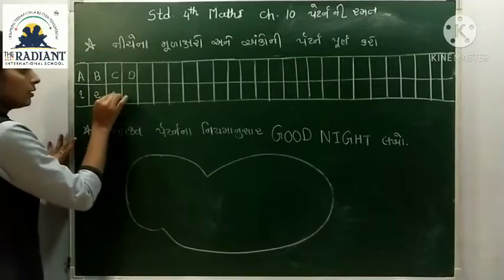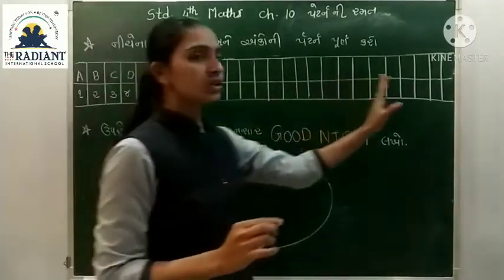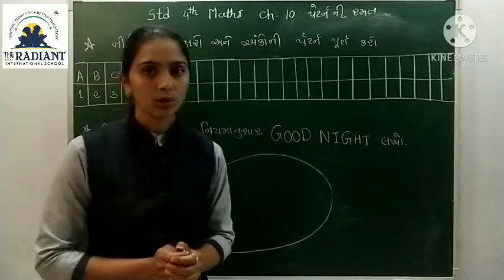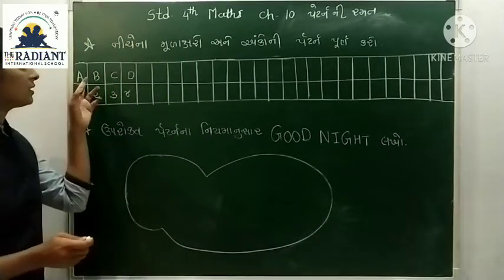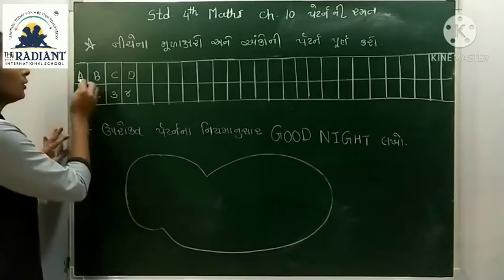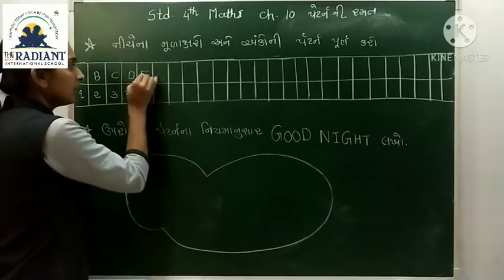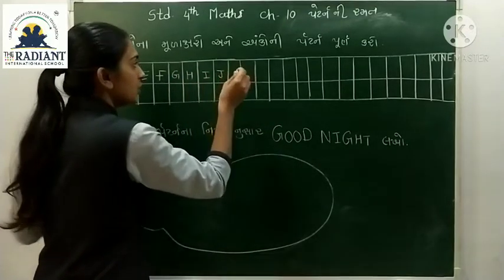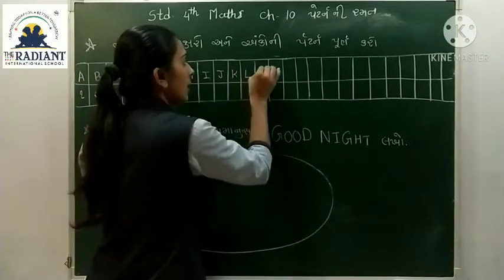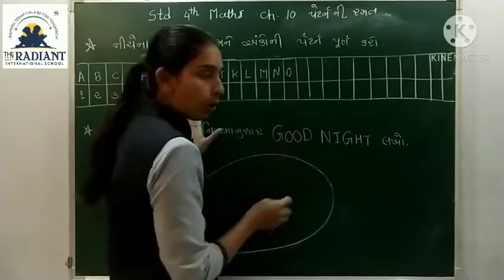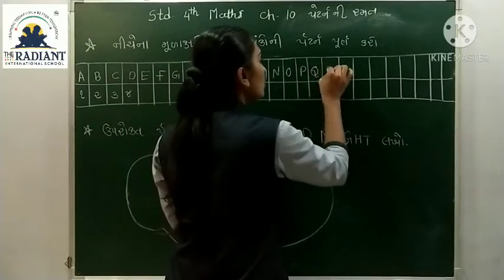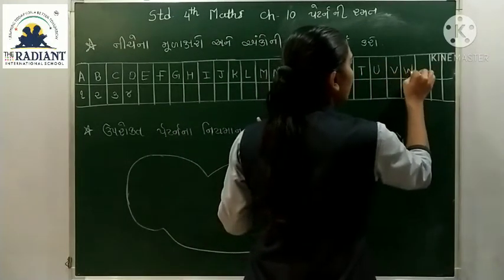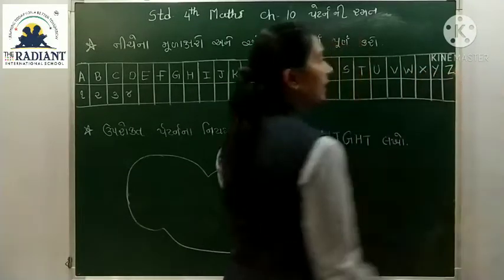અહ્યા આપ રોચે 1, 2, 3 અને 4. એ રીતે આપરે મૂળાક્ષરોને ક્રમ ગોઠવાનાં છે અને જ્યાં સુધી સમાય ત્યાં સુધી આપરે વધવારો છે. તો ચાલો આ પ્રમાણે A B C D E F G H I J K L M N O P Q R S T U V W X Y Z.